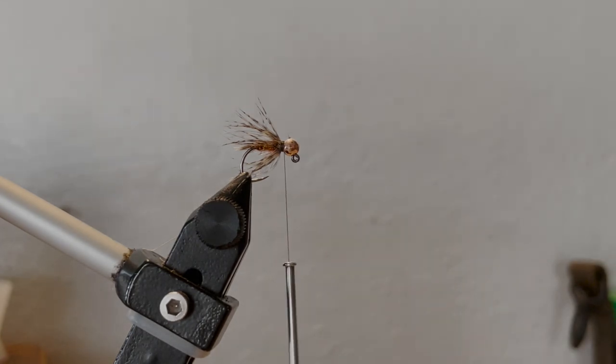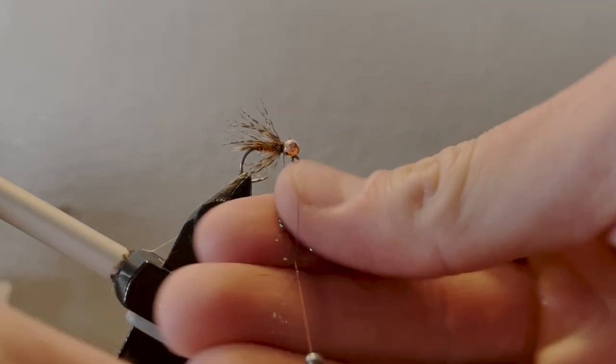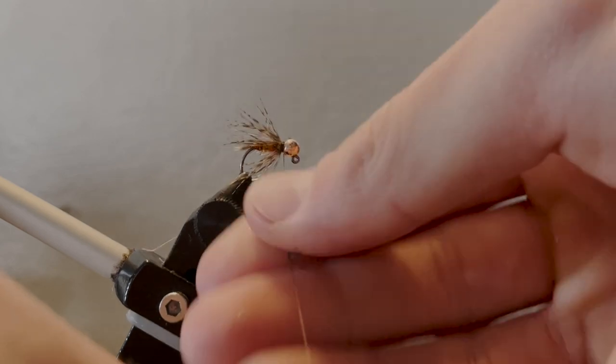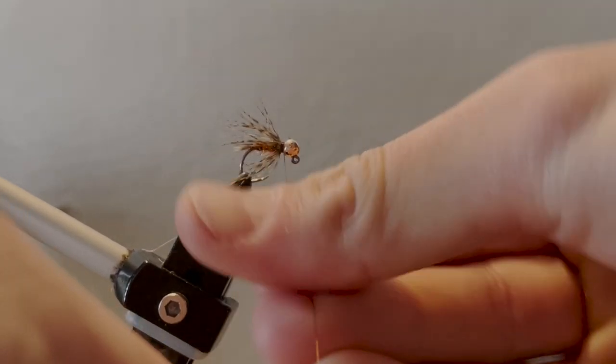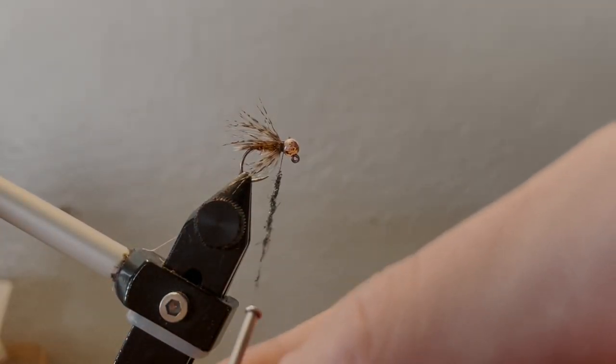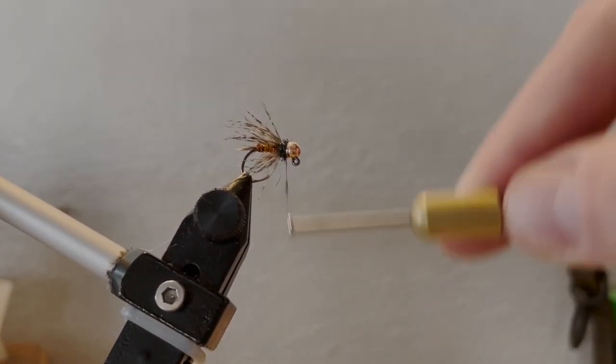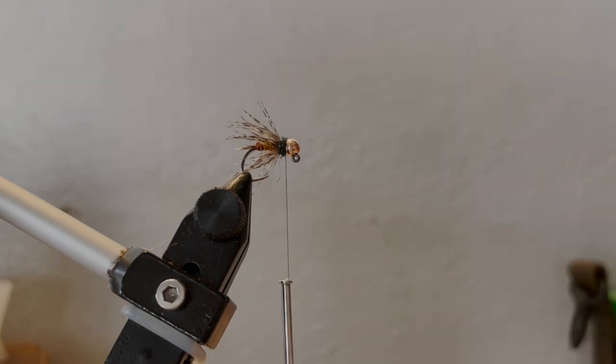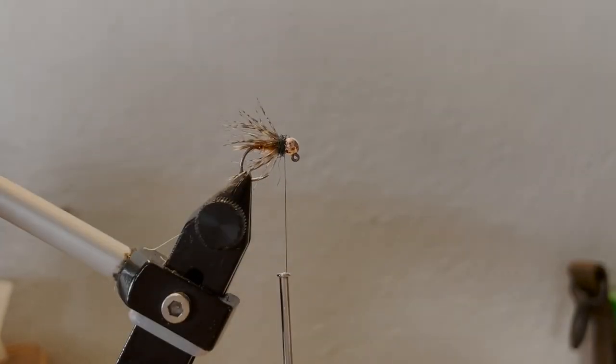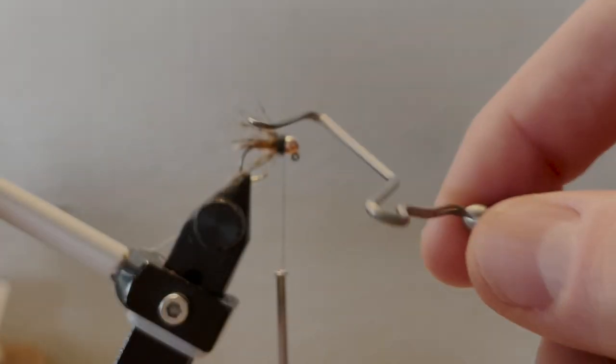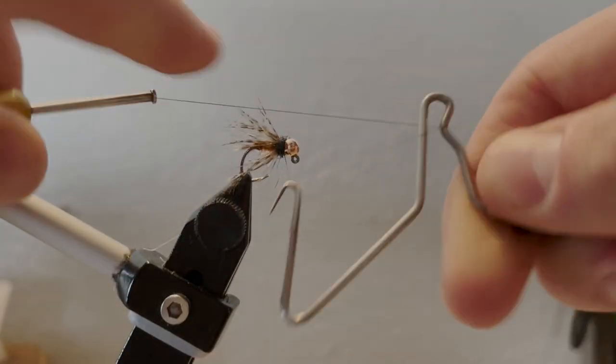Next, grab ice dub peacock black. You want to grab a very small pinch of it to create a very slim, short dubbing noodle to create your head on your fly. Wrap it down to create a nice buggy head, just like that.